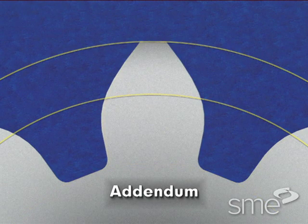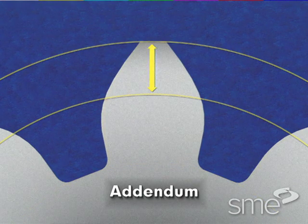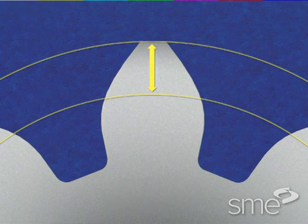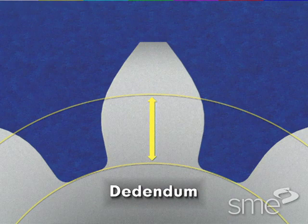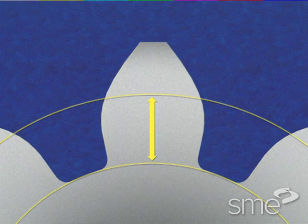The addendum is the radial distance of a gear tooth between the pitch circle and the outside circle. The dedendum is the radial distance of a gear tooth between the pitch circle and the root circle.